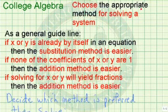In this lesson we want to choose the appropriate method for solving a system of equations. As a general guideline, if x or y is already by itself in an equation, then the substitution method is the easiest.